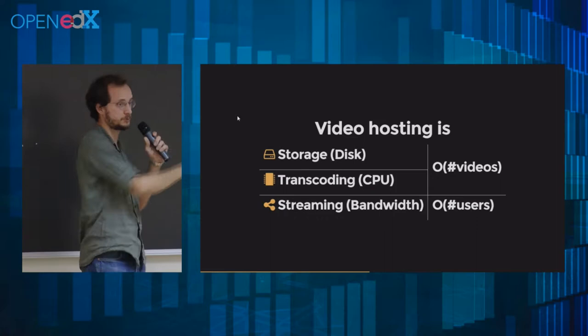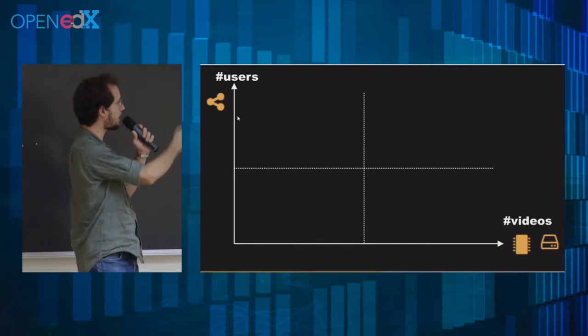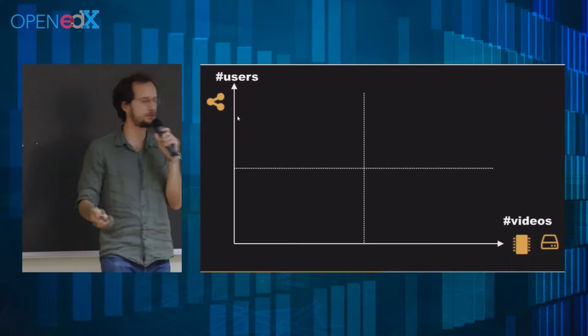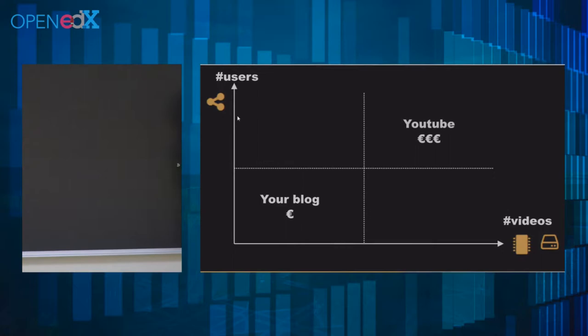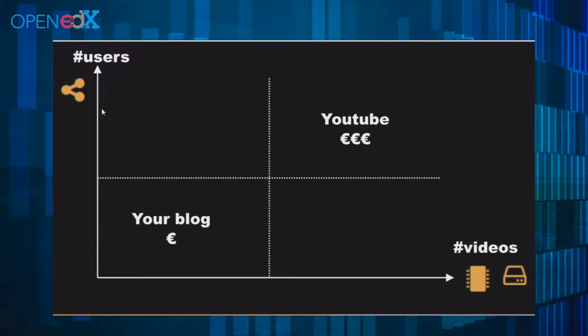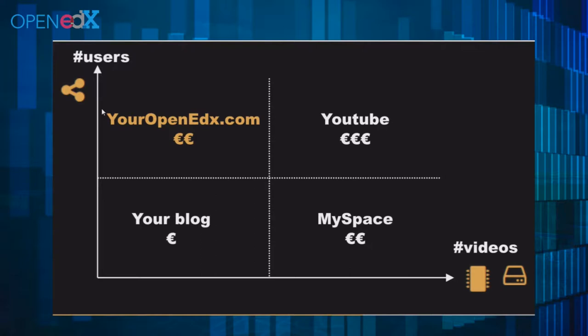So how much is this going to cost you? If you make a graph with number of videos and users — maybe you have a personal blog with a few users and few videos. On the other end is YouTube: many users, many videos, very expensive. Then at the bottom right, many videos, very few users. But you — you are at the top left corner. You have a few videos because you're a MOOC platform, but you have many users. So the cost is not going to be that much.